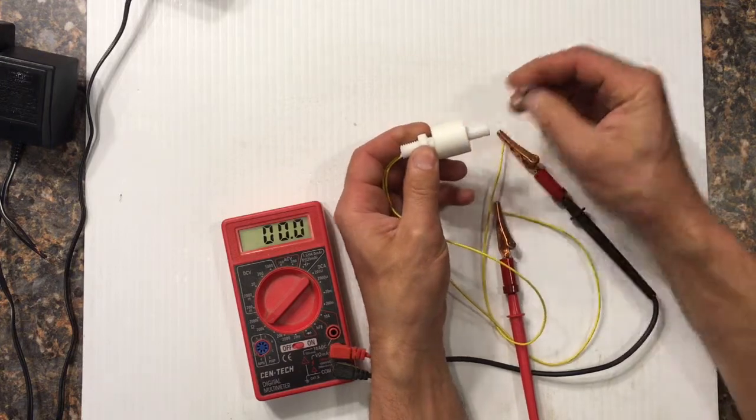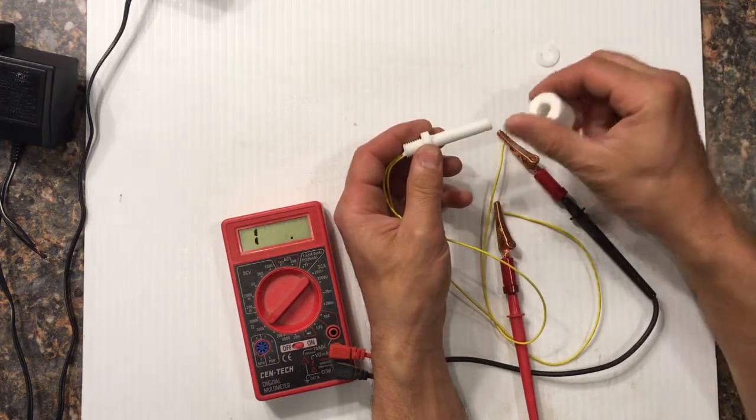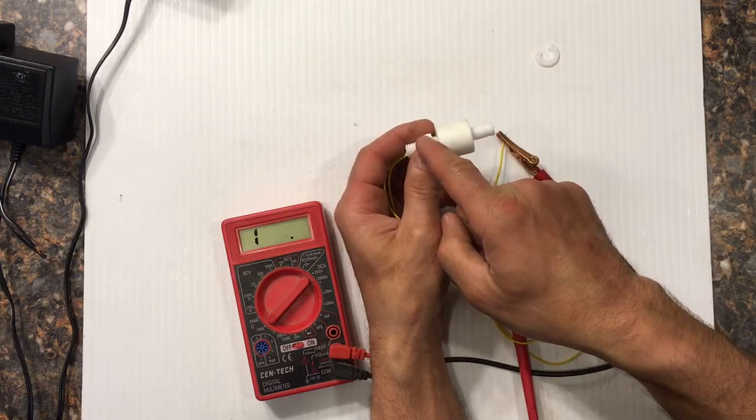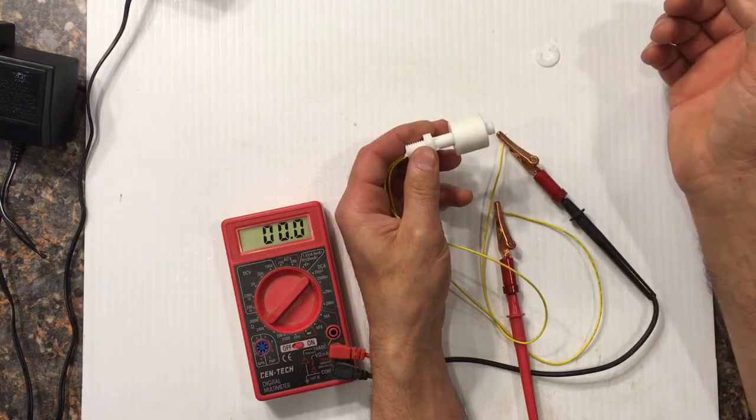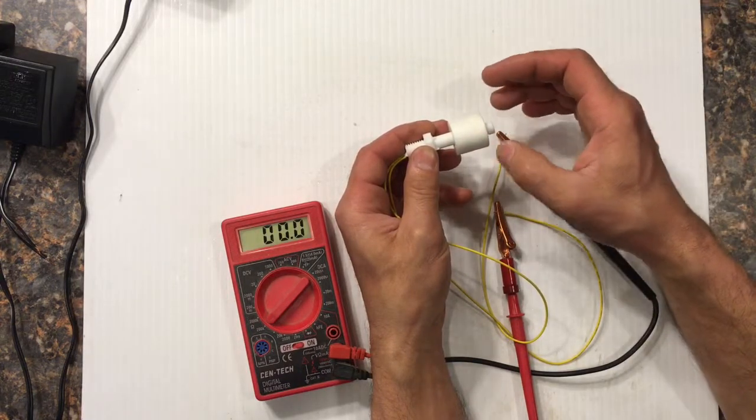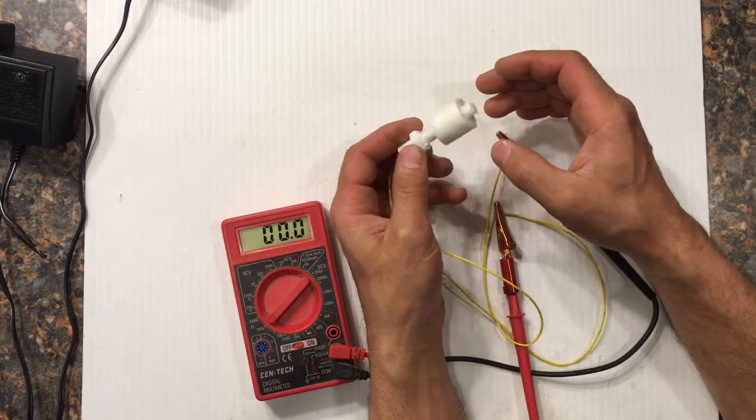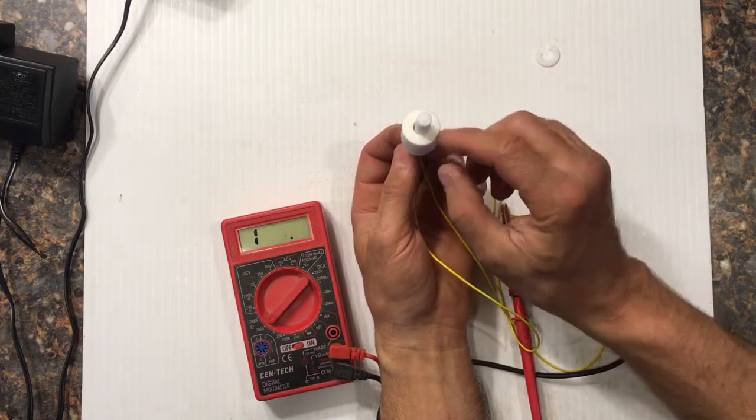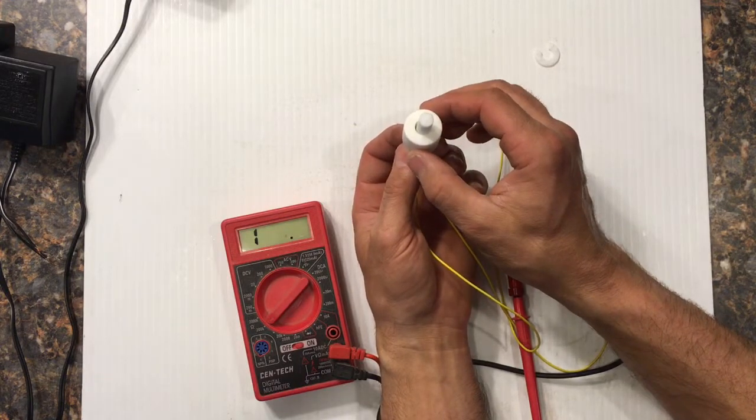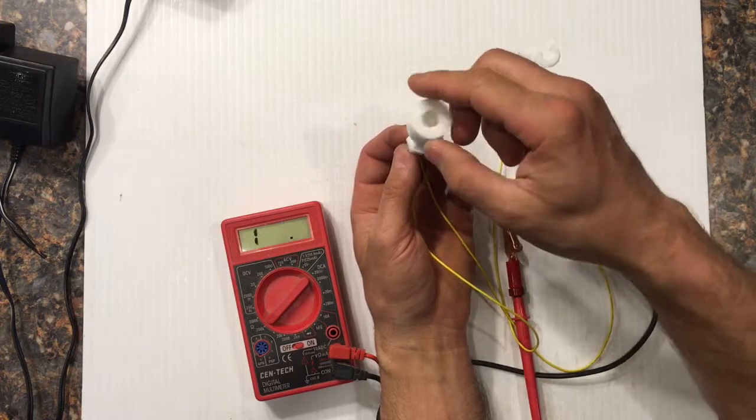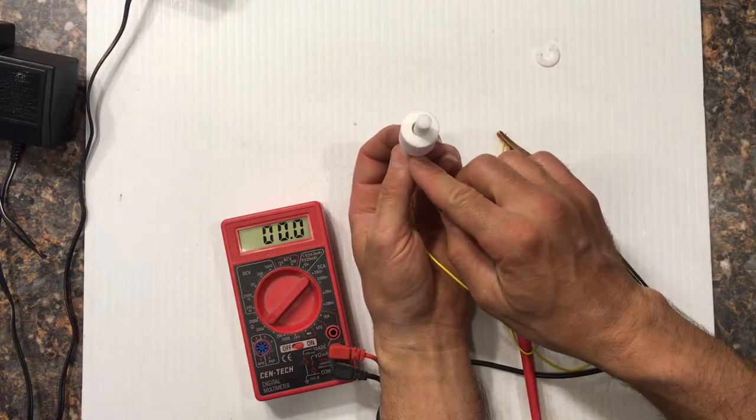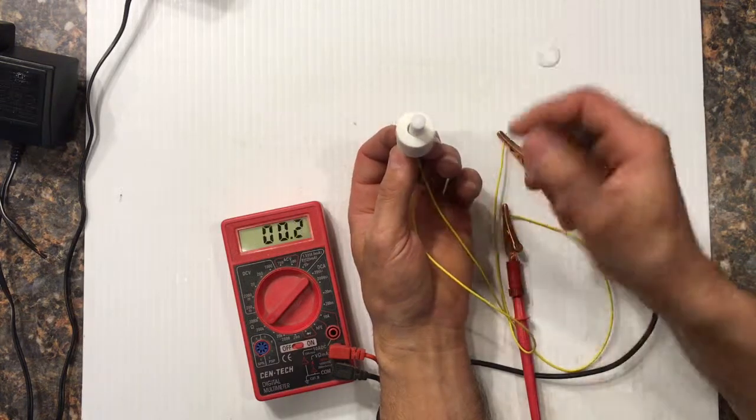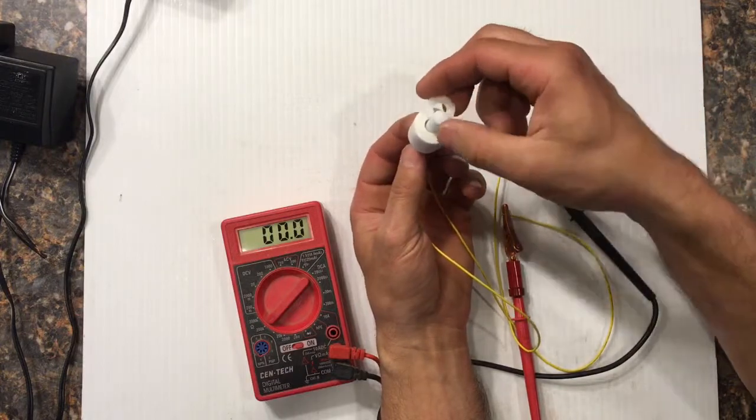So if that's not what you need it to be, all you got to do is take that clip off, flip this around. Now you've got an open circuit, closed circuit. That's how easy these are to flip around, make them do what you want to do. So if you got this in a bracket this way and you want it to have a closed circuit in the down position and an open circuit in the up position, all you got to do is flip it over.